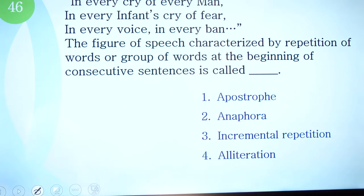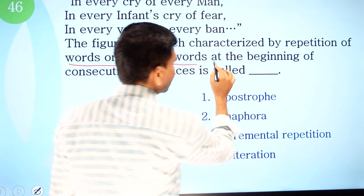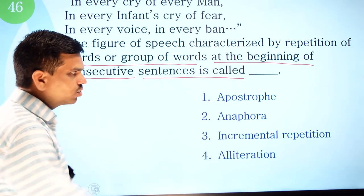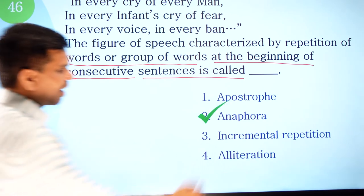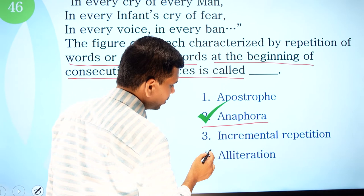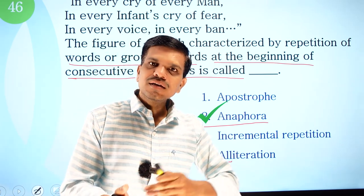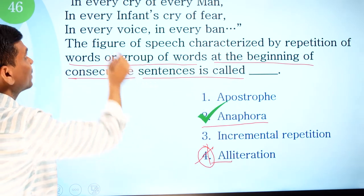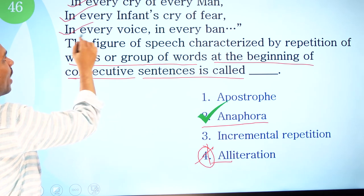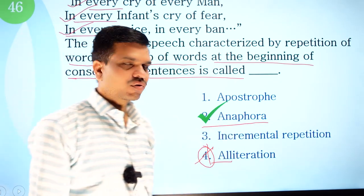Question 46: 'In every cry of every man, in every infant's cry of fear, in every voice, in every ban' — the figure of speech characterized by repetition of words or group of words at the beginning of consecutive sentences is called what? Options: apostrophe, anaphora, incremental repetition, alliteration. Many students might think alliteration, but alliteration involves repetition of consonant sounds anywhere in a line. Here, the word 'every' repeats at the beginning of consecutive lines — this is anaphora.